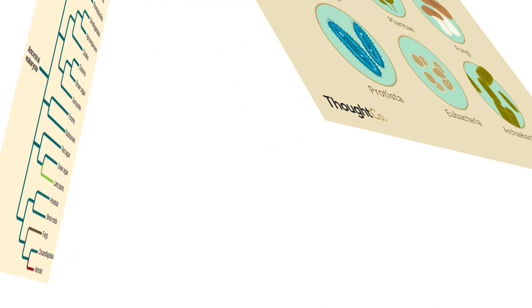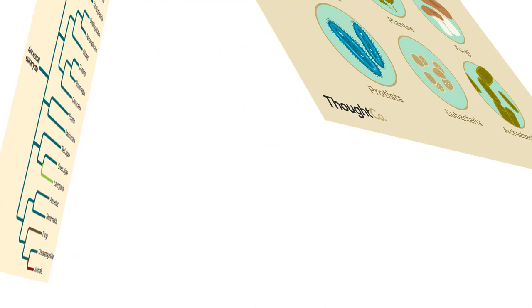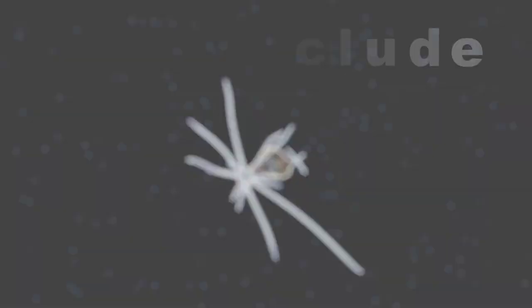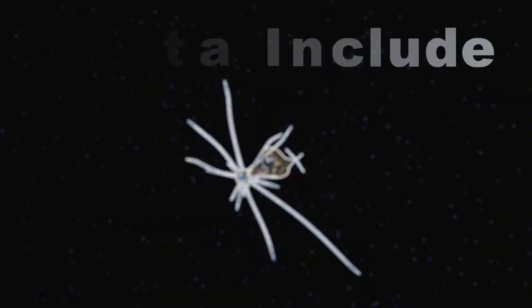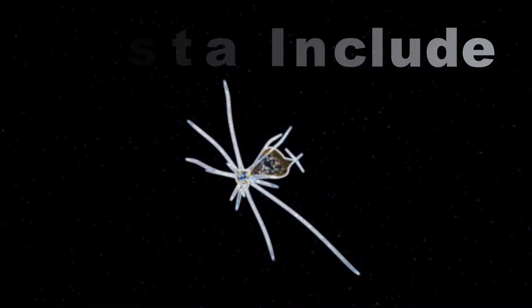The phylogeny of parasites includes four eukaryotic kingdoms. Everything besides land plants and animals can be considered microbial, and everything besides land plants, animals, and fungi would be considered in the kingdom Protista. Protista include plant-like organisms, fungal-like organisms, and animal-like organisms.